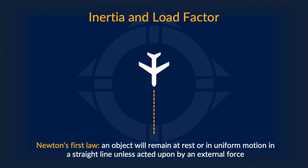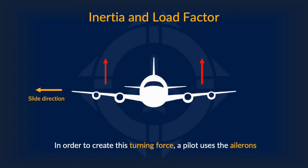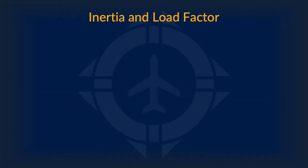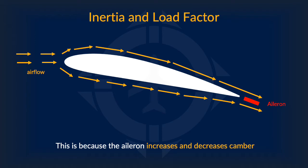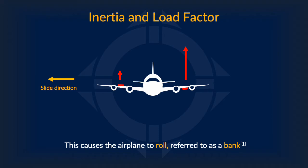The fundamental problem with turning flight is Newton's first law, which states that an object will remain at rest or in uniform motion in a straight line unless acted upon by an external force. In order to turn an aircraft, you must first overcome inertia. To achieve this, a pilot uses the aileron to create a turning force. By turning the ailerons on the outside of the turn down while turning the ailerons on the inside of the turn up, differing amounts of lift are produced. This is because the angle of the aileron increases or decreases camber, which in turn causes the airplane to roll — referred to as going into a bank.